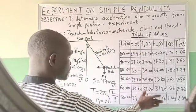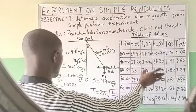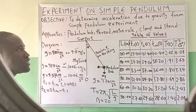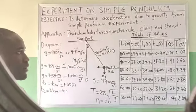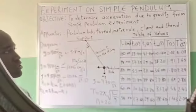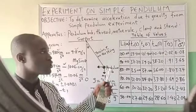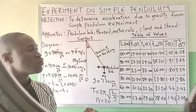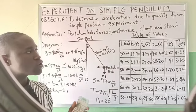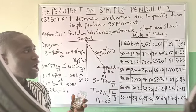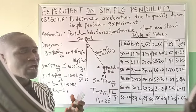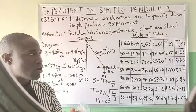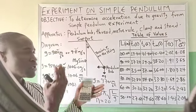We have succeeded in getting our table of values for this experiment. Next is graph plotting, where we will also see how to get the error in the slope. After getting the slope, we calculate the error in the slope. Please include precautions when reporting your results.